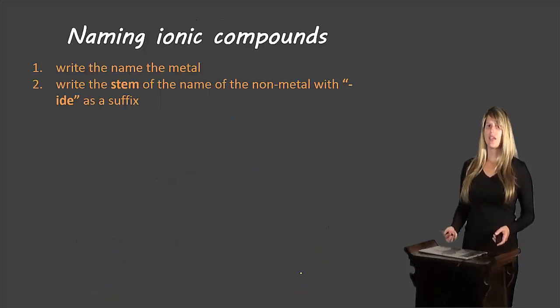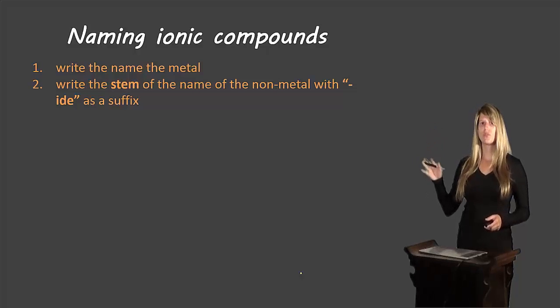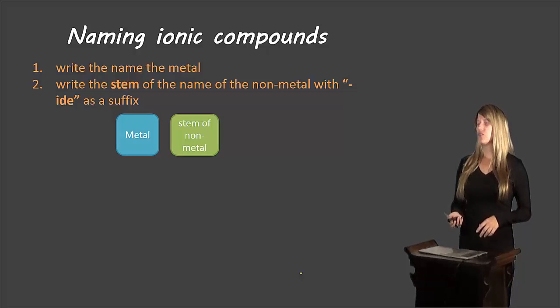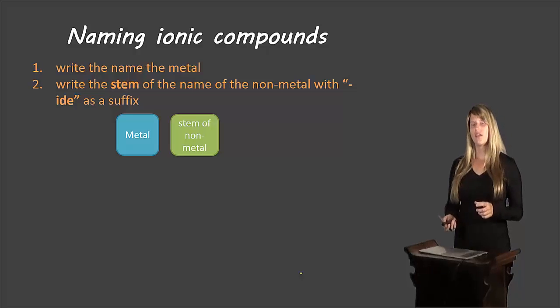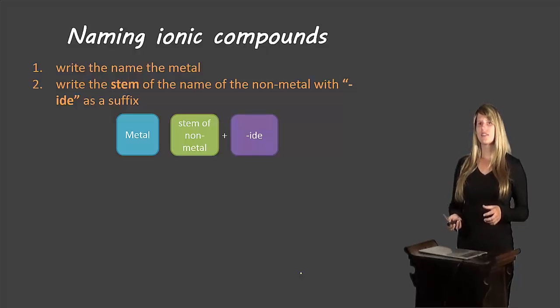And now we'll look at naming ionic compounds. So again, if you'd like to pause the video and write these rules down, you can do that, or you can go based on the schematic. So here you would write the name of the metal, you would write the stem of the name of the non-metal, and we'll look at what those stems look like in a minute. And you would add the suffix i-d-e at the end. So you take off the ending of the original term, and we just write the stem, and then we add i-d-e to make a new ending.